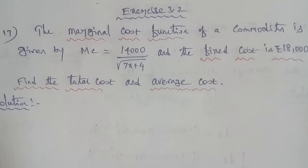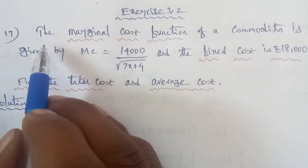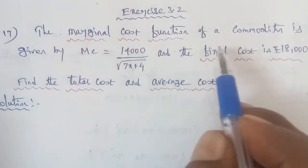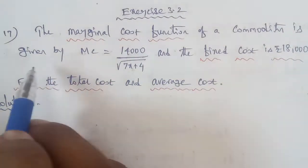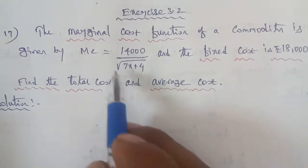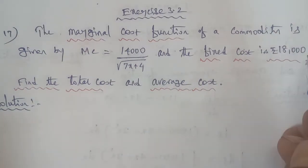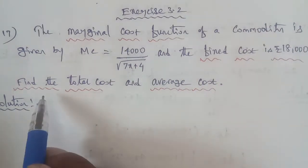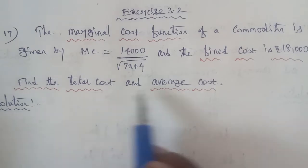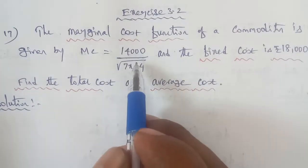Hi students, I am Gopinath. This is Business Maths, question number 17. The marginal cost function of the commodity is given by 14,000 divided by square root of 7x plus 4, and the fixed cost is 18,000. Find the total cost and average cost.